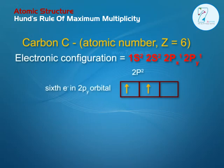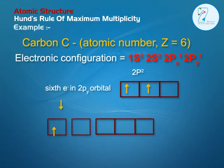Carbon C, atomic number Z equals 6. Electronic configuration equals 1s2, 2s2, 2px1, 2py1. The sixth electron enters in the 2py orbital.